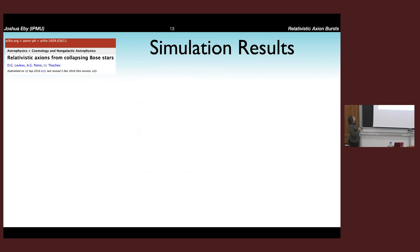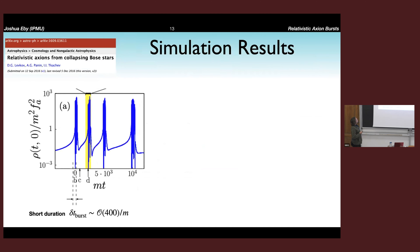Let me describe the simulation that is input to our study. They start from the non-relativistic equations, find dilute bound states, let them go to the maximum mass and watch them collapse. Initially they're non-relativistic but then they solve relativistic equations to account for the number-changing processes and the axions emitted from the star. They find around 30% of the mass is emitted.